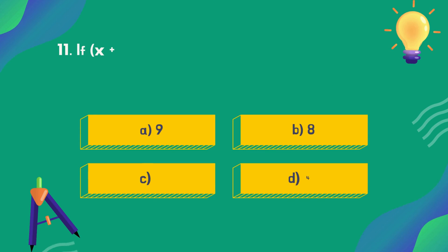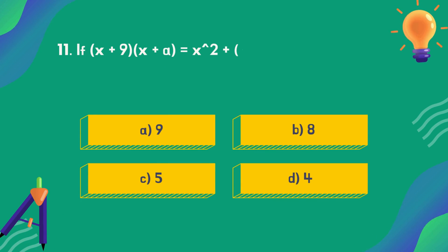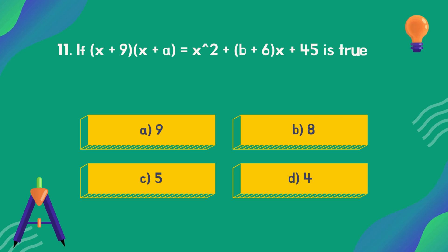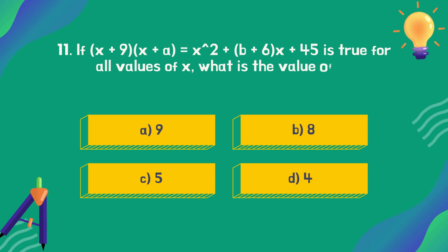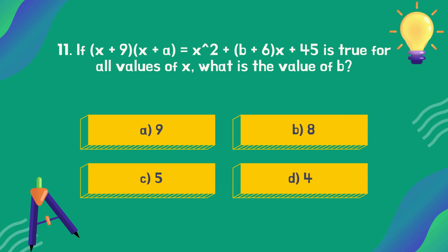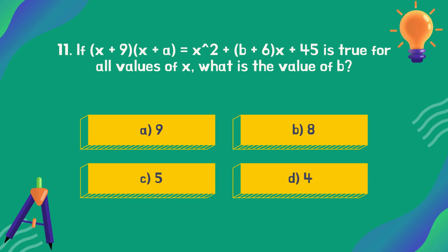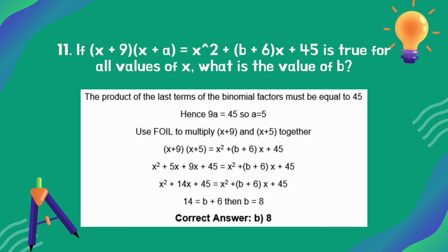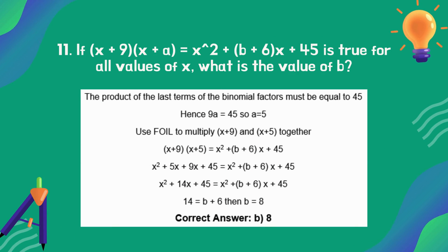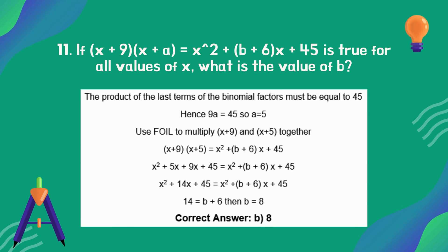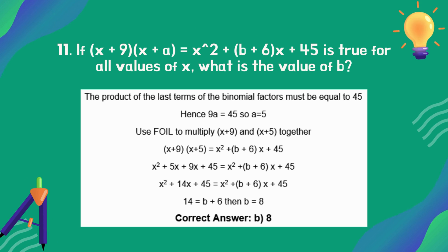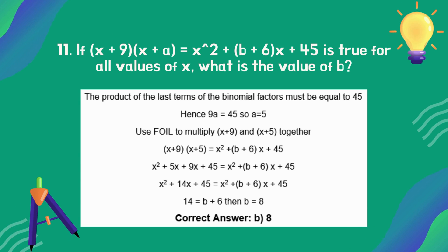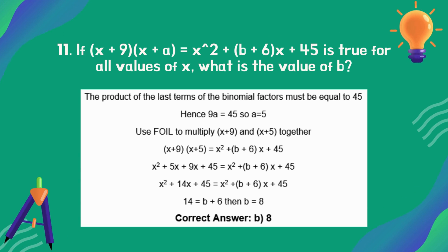If (x + 9)(x + a) = x² + (b+1)x + 45 is true for all values of x, what is the value of b? The correct answer is option B: 8.